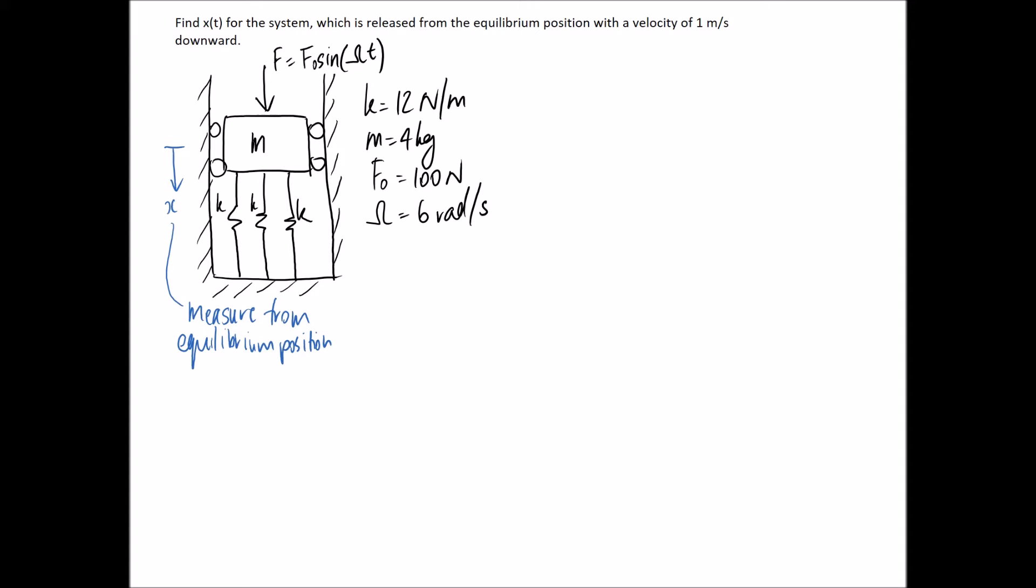Starting off with, we want to draw a free body diagram. If this is my mass and I'm measuring x in the direction of the force, that means both my force and the positive x direction would suggest I'm going to move my mass, mx double dot, downward, so that's the direction of the acceleration. If they're moving downward, my springs are going to try and resist that motion. They're going to try and push back up. I have three of them, each is going to have a force of kx in it. And I've also got this additional force that I need to consider, which is equal to F0 sine omega t. Remember, we're not putting weight on this free body diagram because you don't need to when you're measuring from the equilibrium position.